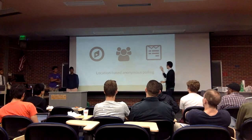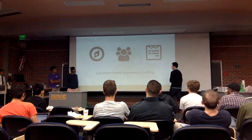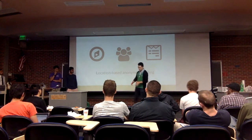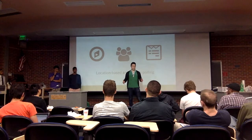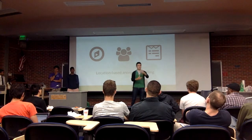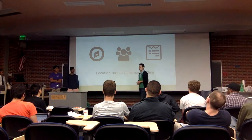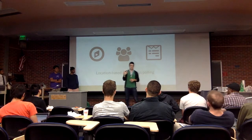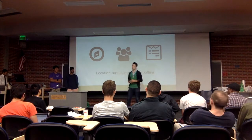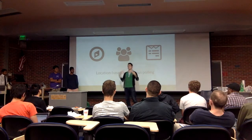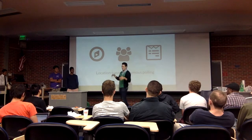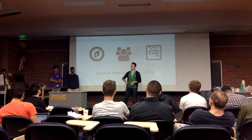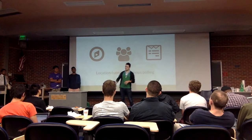Pollo is a location-based anonymous polling application. What it does is it allows for people in a region to pull out their phones and get instant feedback from the community around them. The use case that sparked this idea was classrooms like this — asking 'what's your favorite color?' or during a meeting, 'what shirt size does everybody need?' So it allows for immediate polling.